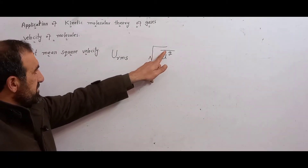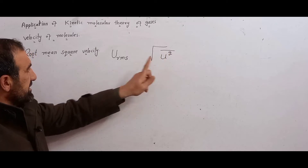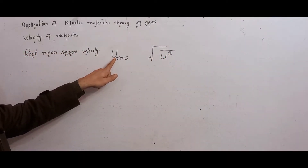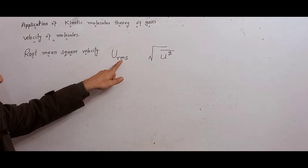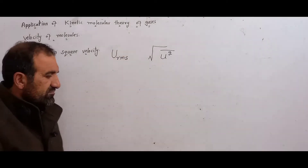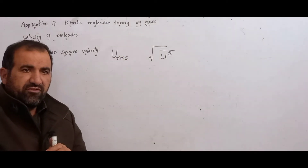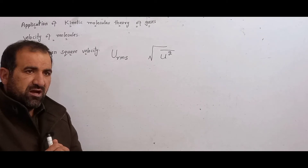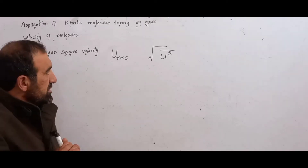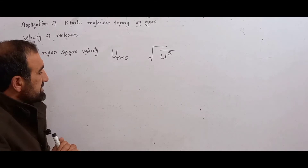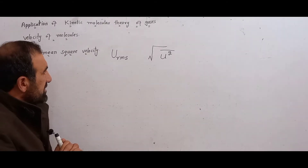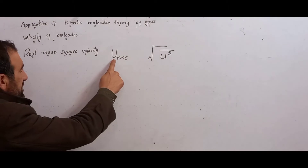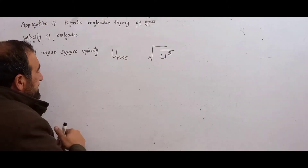The square root of mean square velocity is called root mean square velocity, denoted by u_rms.